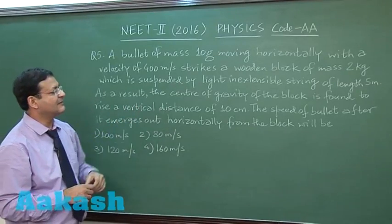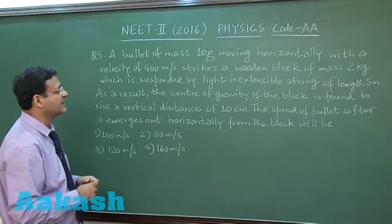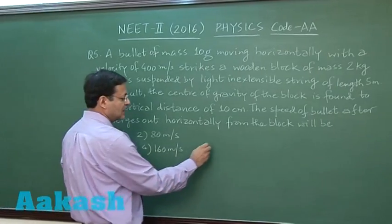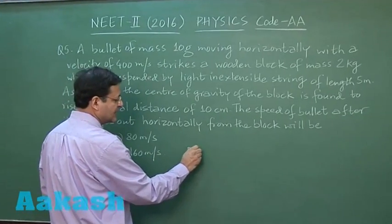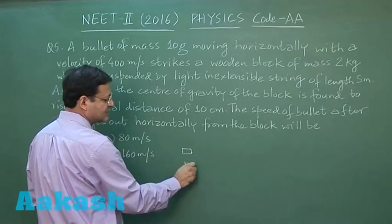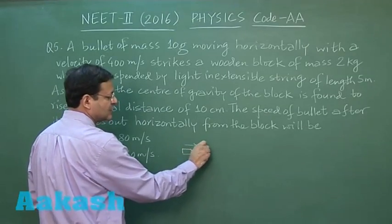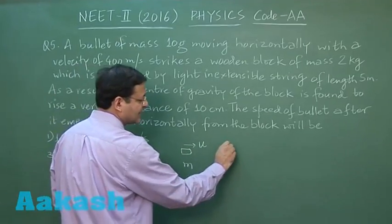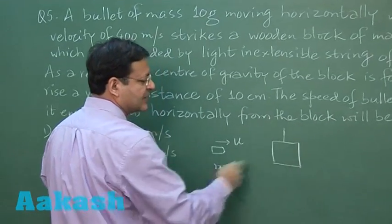The block is suspended by a light inextensible string of length 5 meters. As a result, the center of gravity of the block is found to rise a vertical distance. So here you see there is a bullet of small mass, it is moving with some initial velocity U, and this wooden block has been suspended by a string.